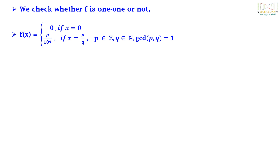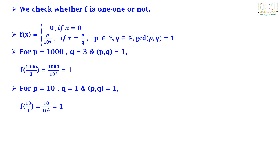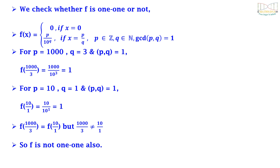To check if f is 1-1: take p = 1000, q = 3 with gcd(p, q) = 1. Then f(1000/3) = 1000 / 10³ = 1. Now take p = 10, q = 1 with gcd(p, q) = 1. Then f(10/1) = 10 / 10¹ = 1. Here f(1000/3) = f(10/1) but 1000/3 ≠ 10/1, so f is not 1-1 either. Hence the correct answer is option d.